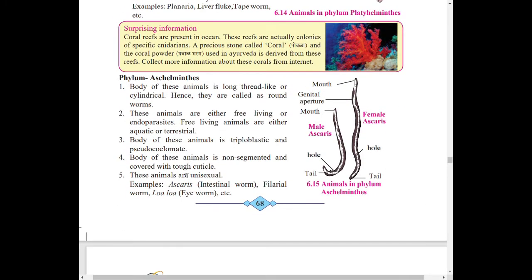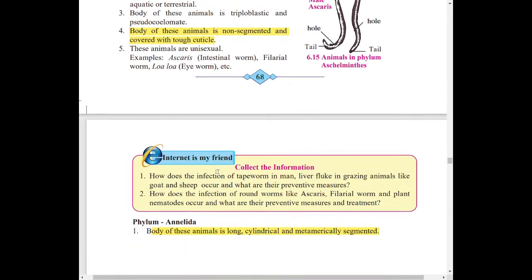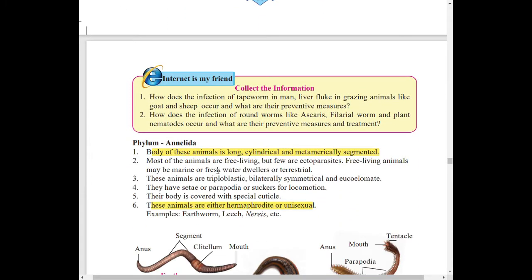In phylum Aschelminthes, this first important point you have to remember. The body of the animal is non-segmented and is covered with tough cuticle. Moving on to phylum Annelida, the first point you have to remember and also this point is important. These animals are either hermaphrodite, means bisexual, or unisexual.